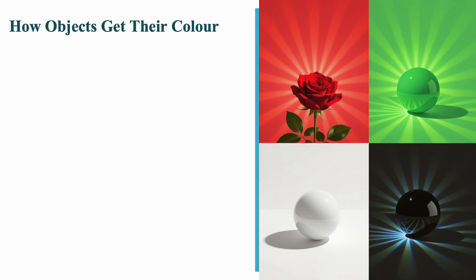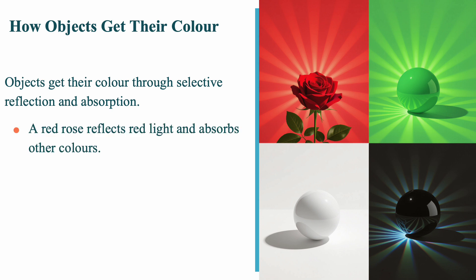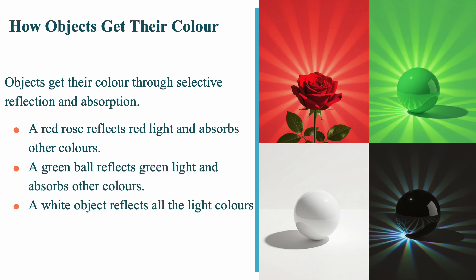Let's look at how everyday objects get their color. Objects appear colored because of selective reflection and absorption. For example, a red rose looks red because it reflects red light and absorbs all other colors. A green ball reflects green. White objects reflect all colors while black objects absorb them. This is an example of color subtraction in action.